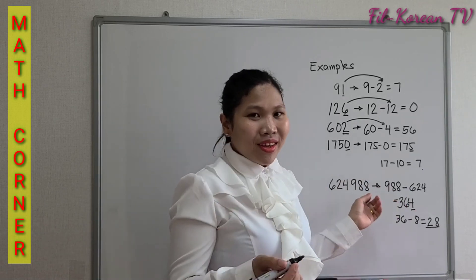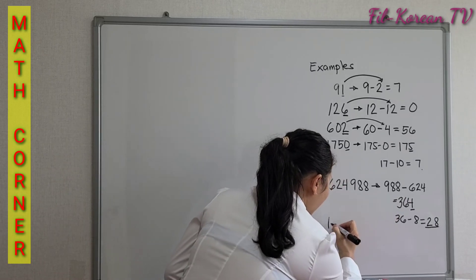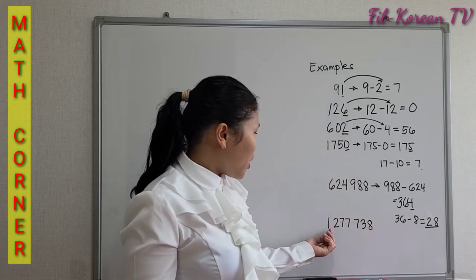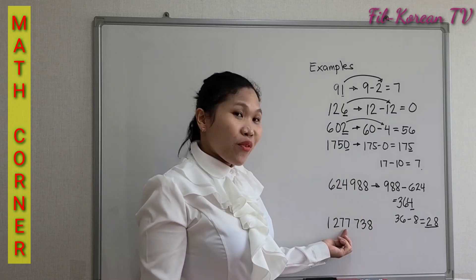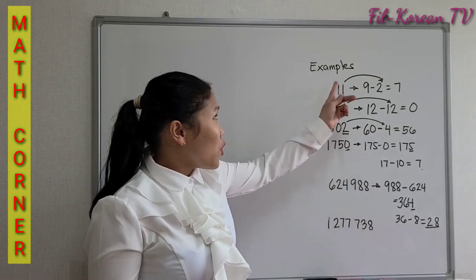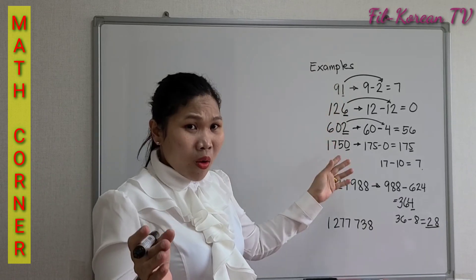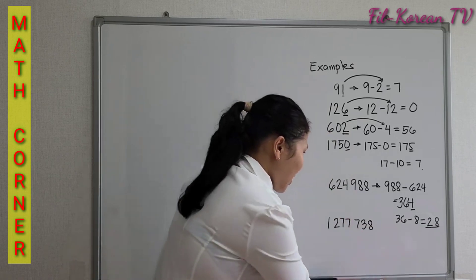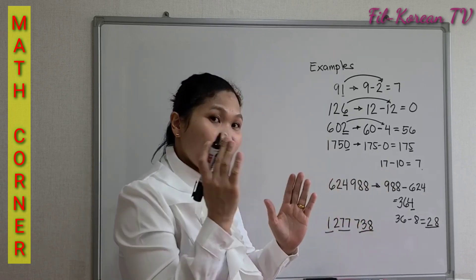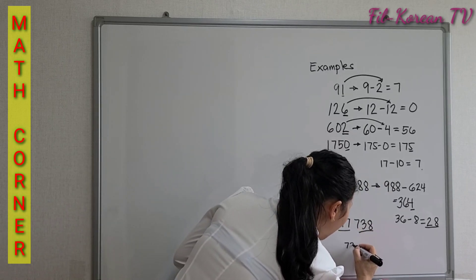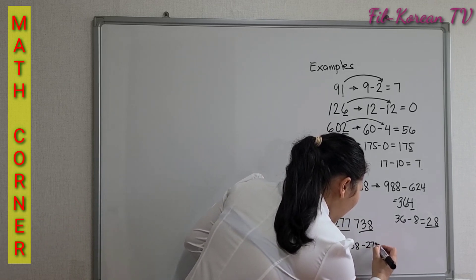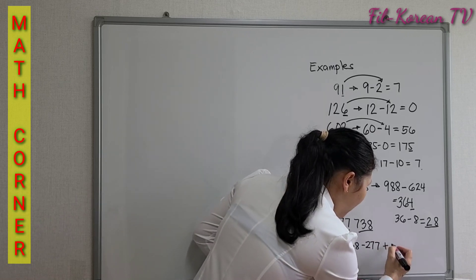For another example using a larger number, take 1,277,738. Since it is a large number, using the first rule alone would be very slow, so we use the grouping method first. Grouping from right to left in blocks of three: the first group is 738, the second group is 277, and the third group is 1.